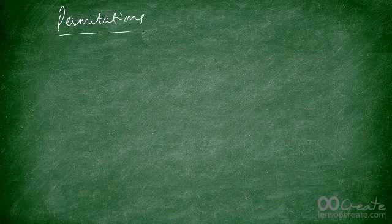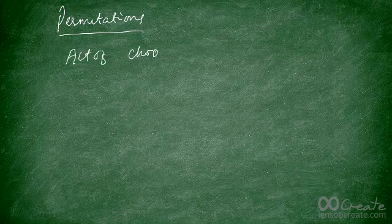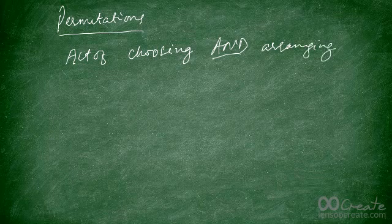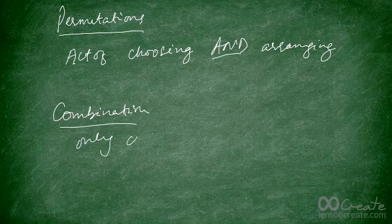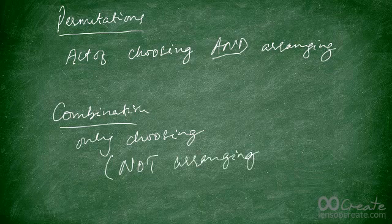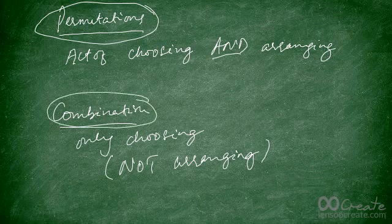We're going to start off by learning some basics of permutations. The first thing you need to know is the difference between permutations and combinations. Permutations relate to the act of choosing and arranging different outcomes. On the other hand, in combinations, we are only choosing — we are not arranging. Please remember this clear distinction. Therefore, the number of permutations is always going to be greater than the number of combinations.